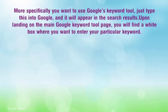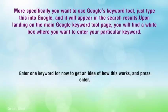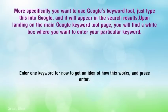More specifically, you want to use Google's Keyword Tool — just type this into Google and it will appear in the search results. Once you land on the main Google Keyword Tool page, you will find a white box where you want to enter your particular keyword. Enter one keyword for now to get an idea of how this works, and press Enter.